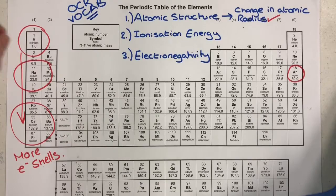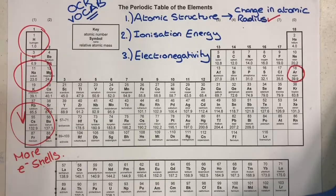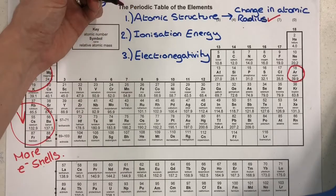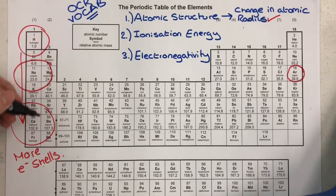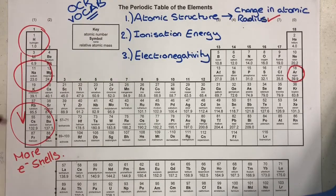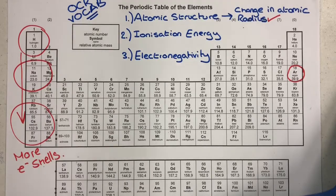So let me just sum that up for you. Down a group ionization energy decreases because the atomic radius increases, shielding increases, and therefore the valence electron is less attracted to the nucleus and requires less energy to be removed.